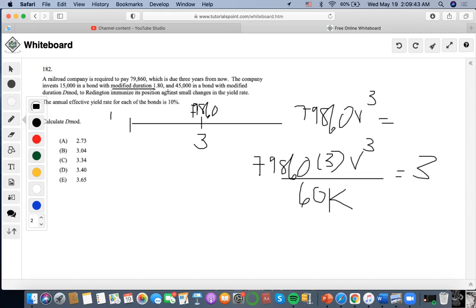So for this liability, it has modified duration of 1.80, and now once we find the duration, we want to multiply it by the weight. So what is the weight? The weight is how much the asset is worth in relation to the present value that we initially solved for. So we're going to do $15,000 divided by $60,000, and we're going to get 0.25.